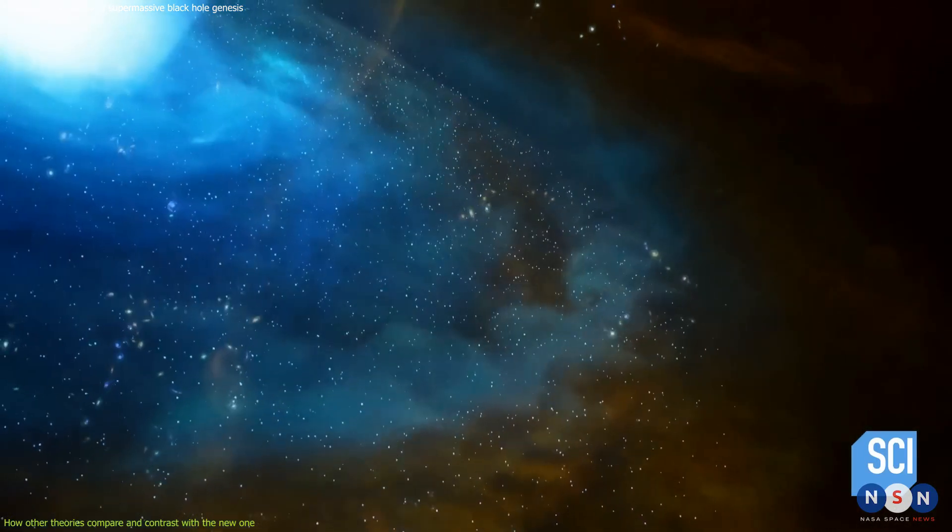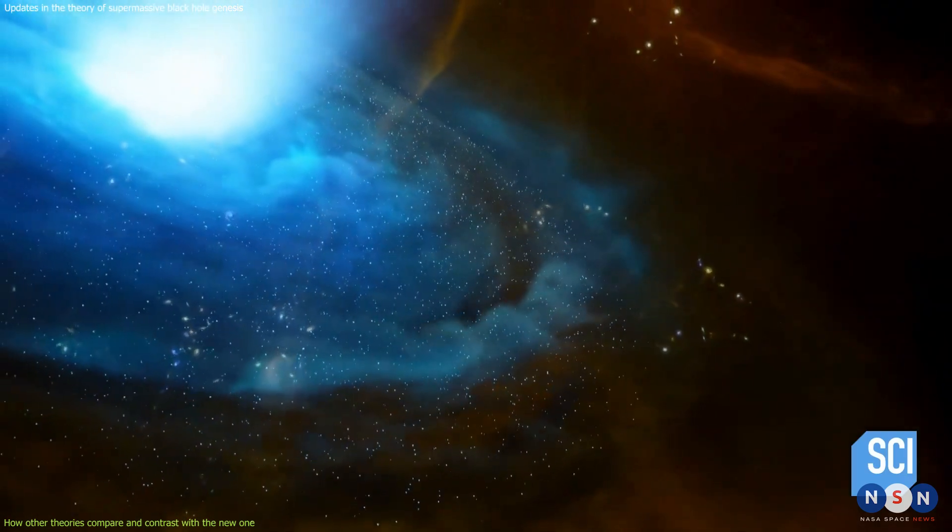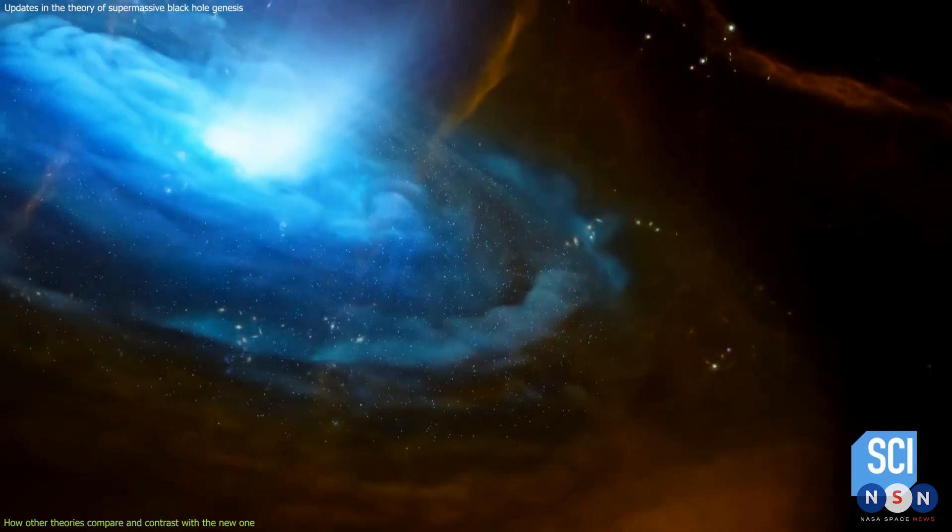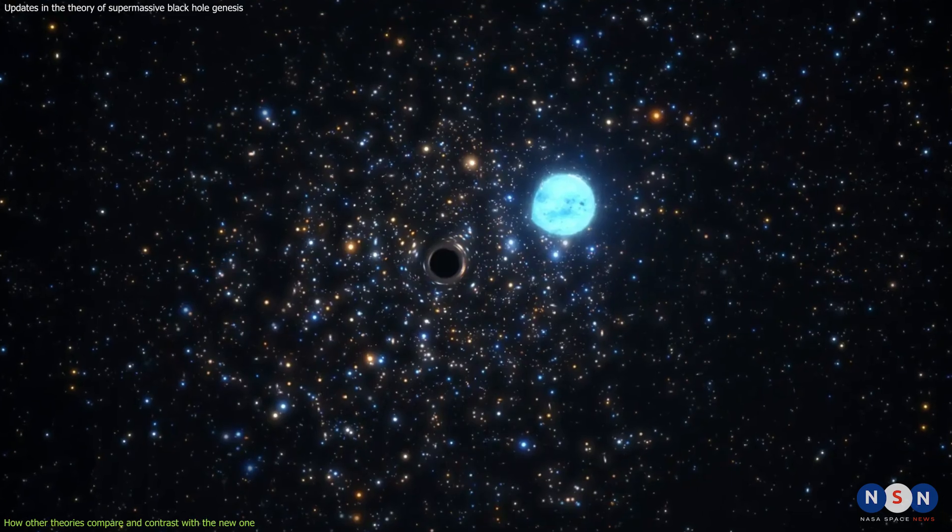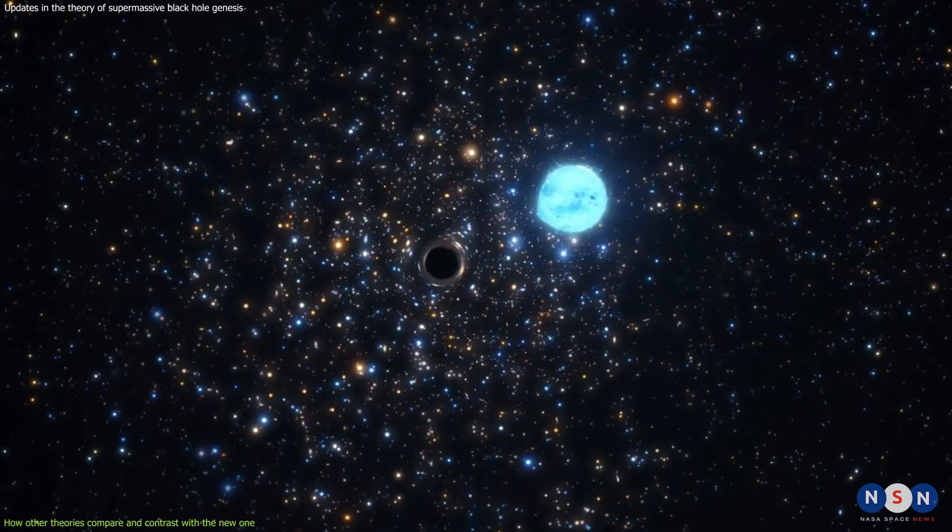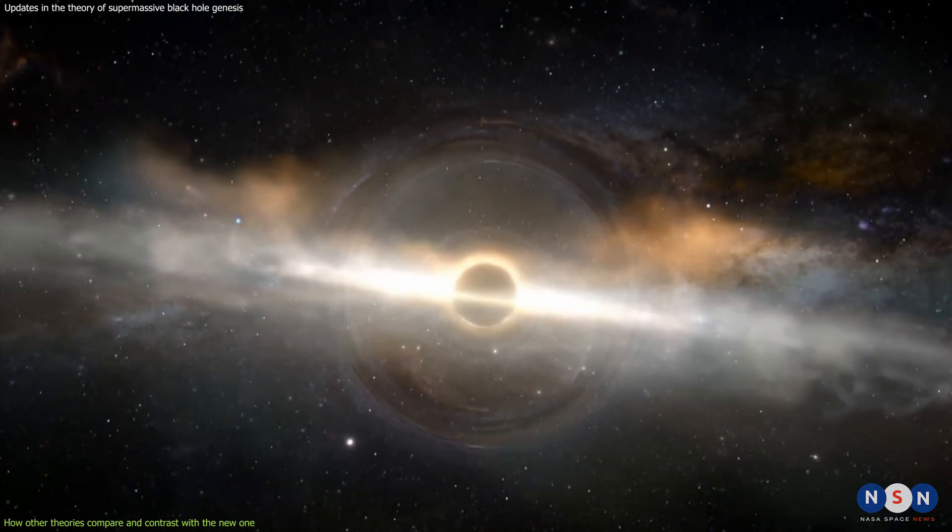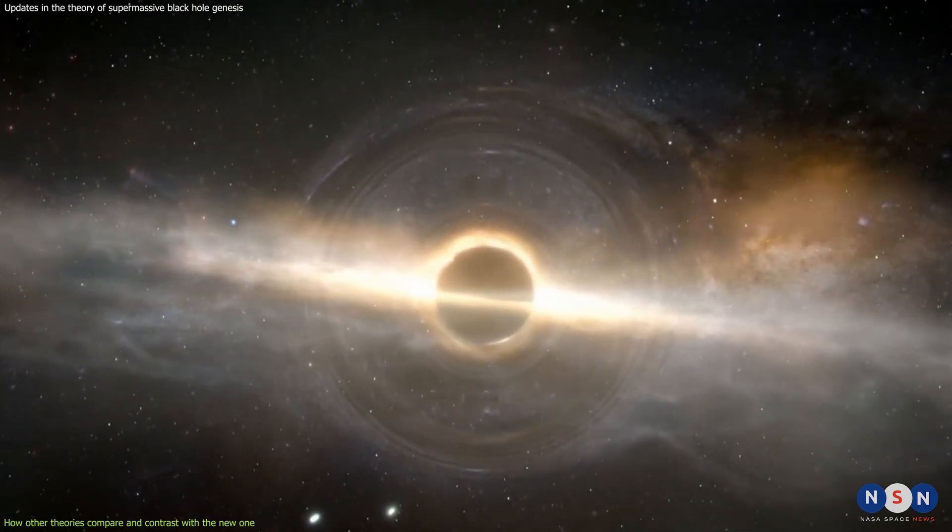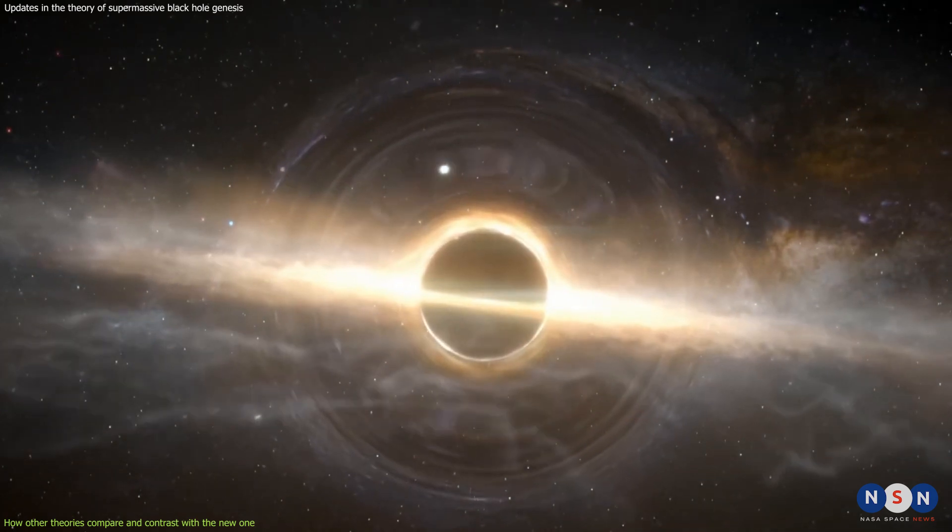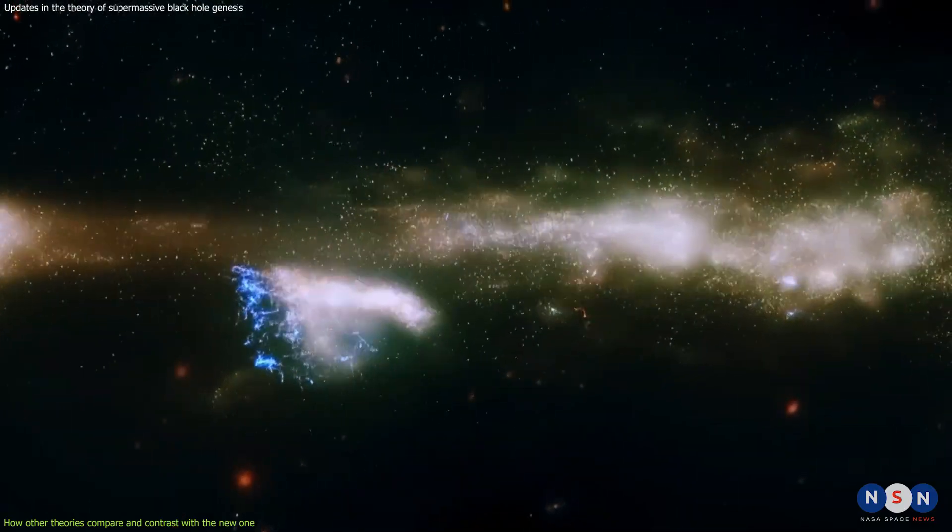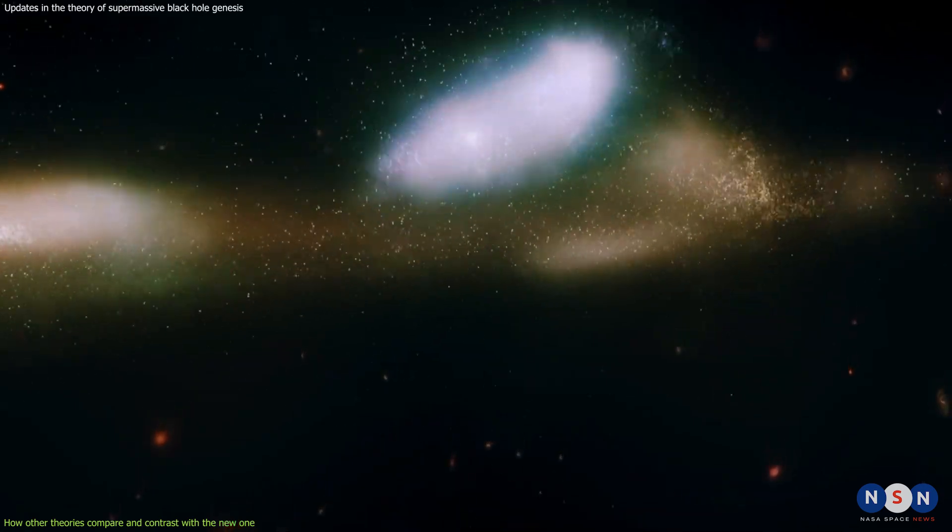This theory has some advantages, such as being able to produce supermassive black holes in different types of galaxies and being supported by observations of star clusters around supermassive black holes. However, it also has some drawbacks, such as being too rare to produce enough supermassive black holes in the early universe and requiring very high densities and velocities for the collisions or mergers to happen.